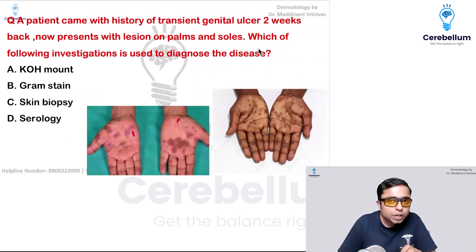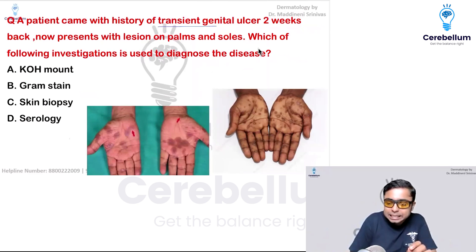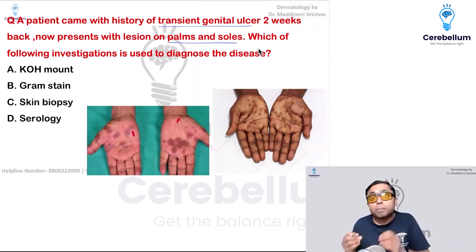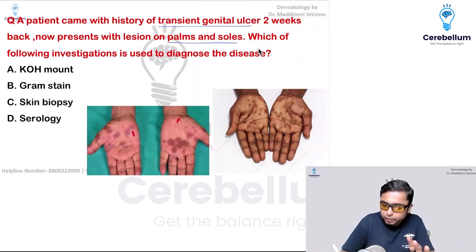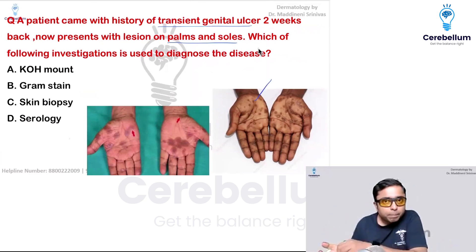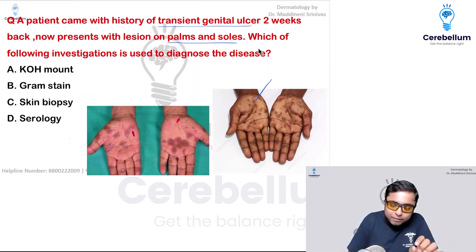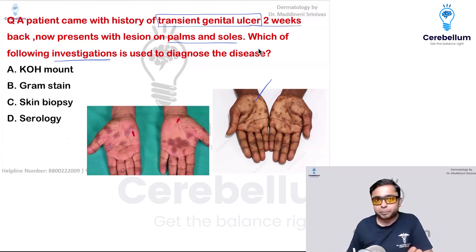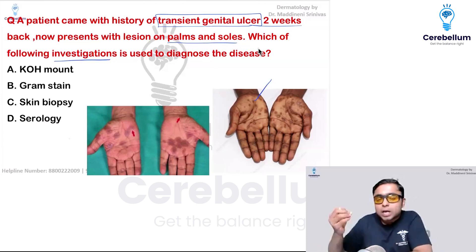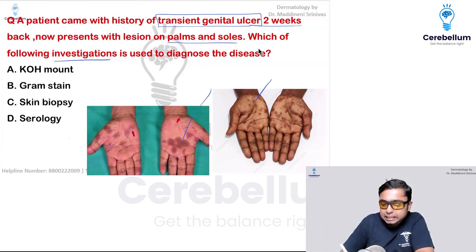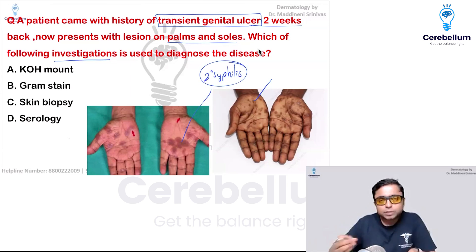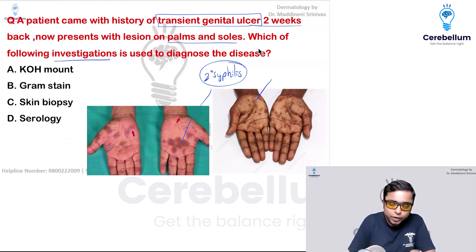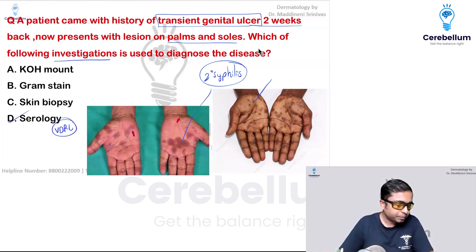The next question describes a patient with a history of a transient genital ulcer two weeks back, now presenting with lesions on the palms and soles. The images show hyperpigmented patches and plaques on the palms. Whenever you see a scenario with a transient genital ulcer followed by hyperpigmented lesions over the palms, you should think of syphilis — specifically secondary syphilis — caused by Treponema pallidum. The investigation of choice is VDRL, a serological test. So the answer is serology.